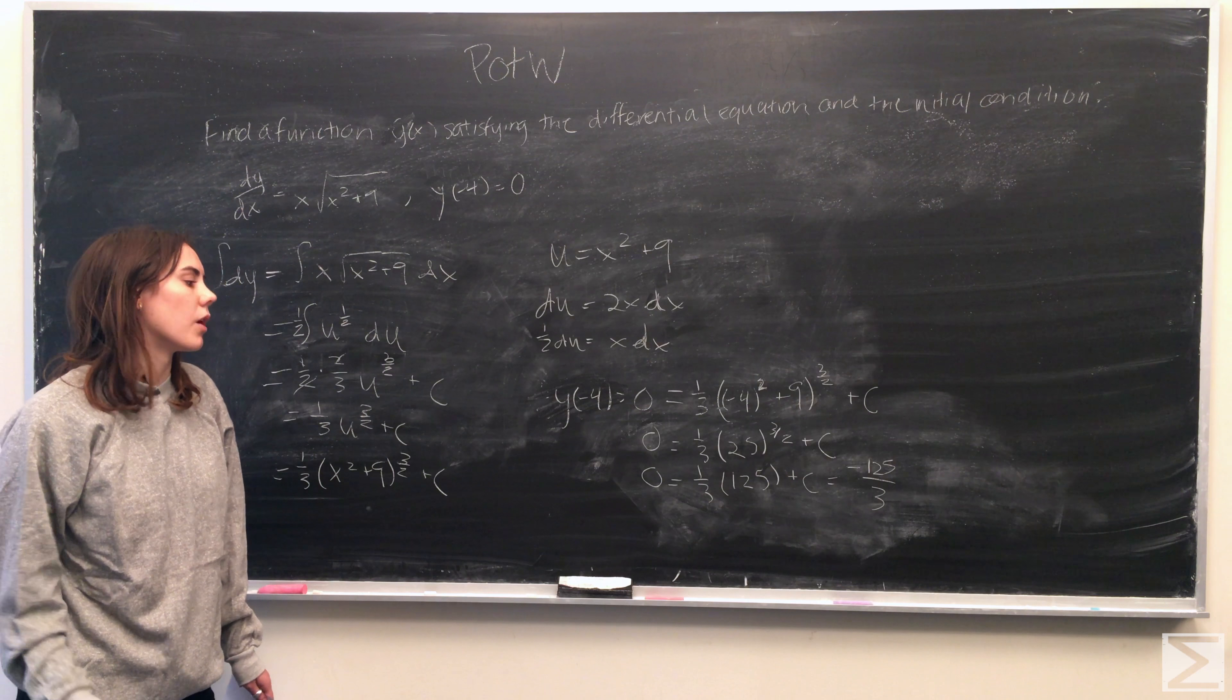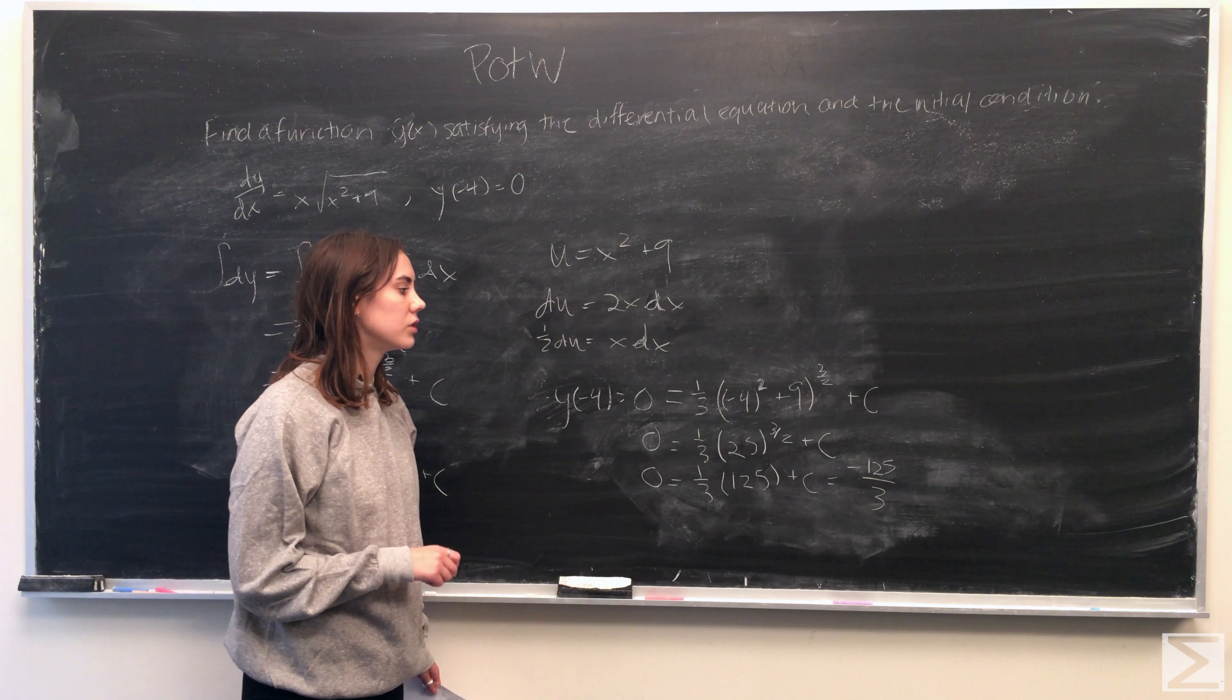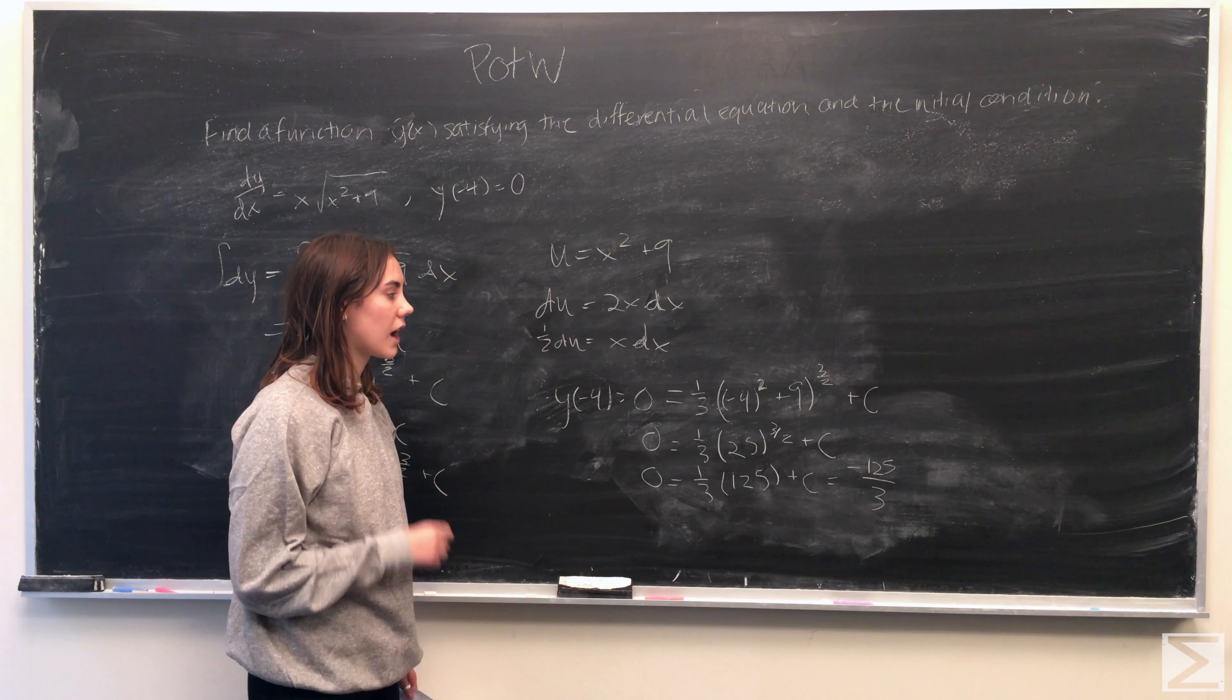And continuing, we then get 1 third times 125 plus c is equal to 0. So therefore, c has to be equal to negative 125 over 3.